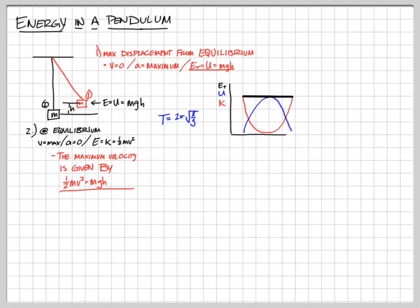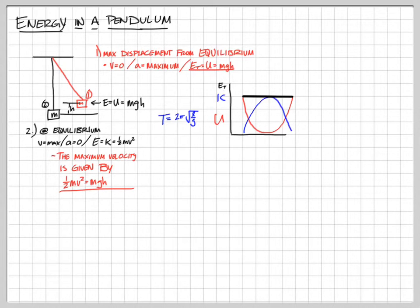Here's the energy graph for the pendulum. Kinetic energy is in blue — zero kinetic energy at the highest amplitude and maximum kinetic energy at equilibrium. Potential energy is in red — highest potential energy when pulled all the way out to position one, and lowest back at position two. In fact the potential energy graph looks a lot like the path of the object. The total energy never changes; it's always equal to the maximum potential energy and the maximum kinetic energy.